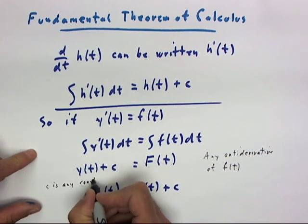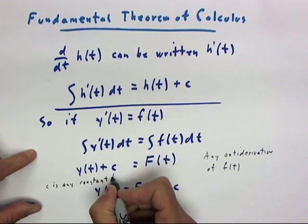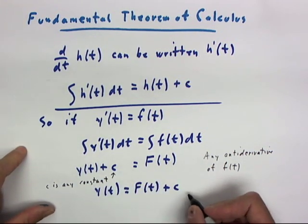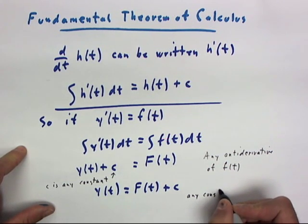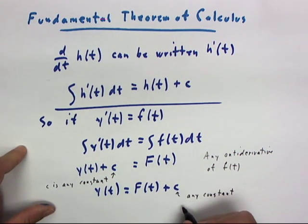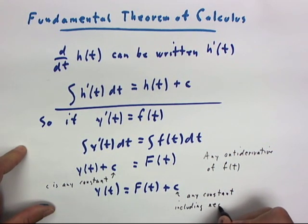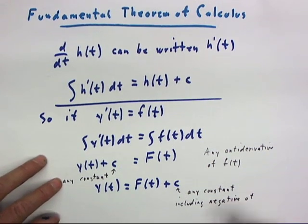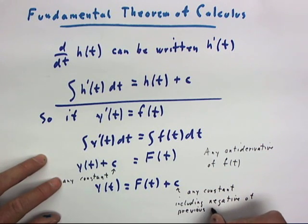C can be any constant, and this c here can be any constant, and that would include the negative of our previous c.